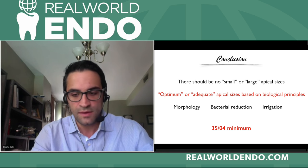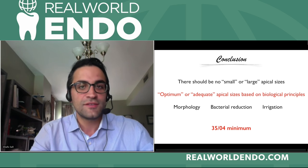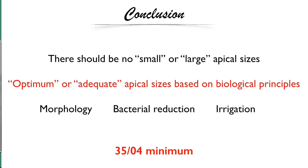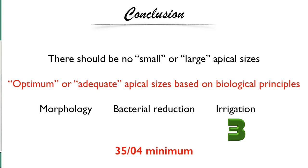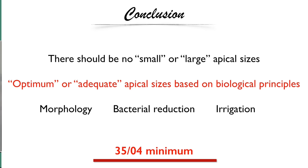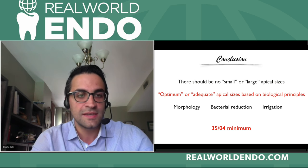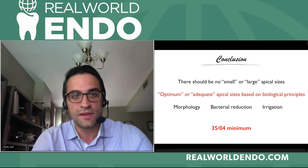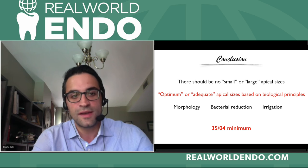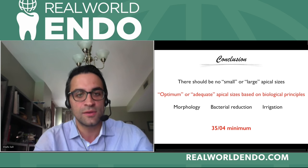To wrap up: there should be no thinking of small or large apical size. What we should consider is optimum or adequate apical size based on three biological principles — the morphology of the tooth, the bacterial reduction we want to achieve, and the irrigation that complements bacterial reduction. For a regular tooth without calcification or sharp curves, a minimum of size 35 with a 0.04 taper is required to truly disinfect the root canal system. Size 35 or 40 is what we should start calling adequate apical size.